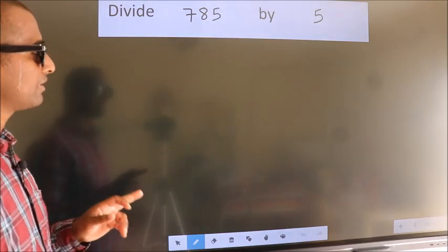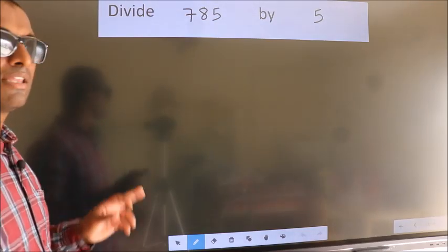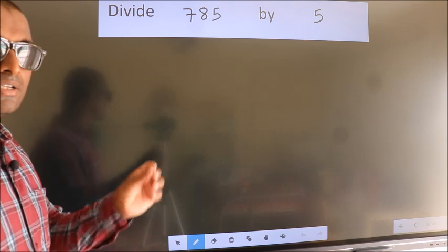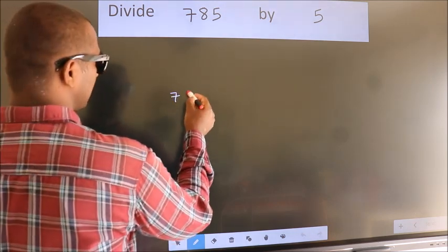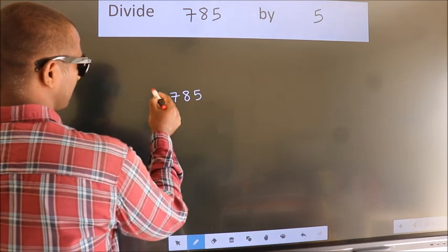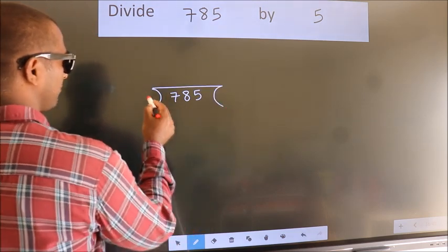Divide 785 by 5. To do this division, we should frame it in this way. 785 here, 5 here.